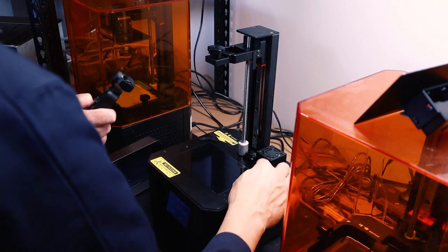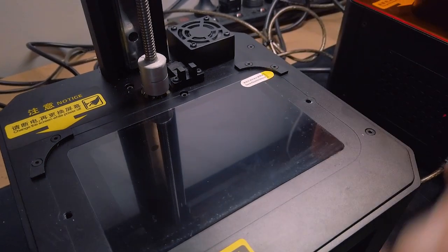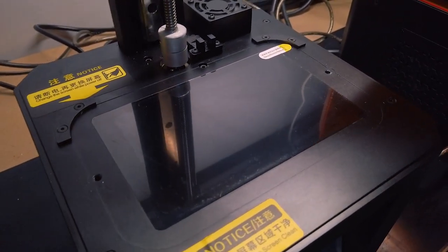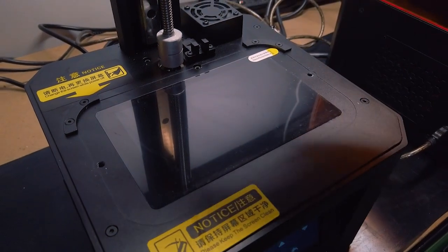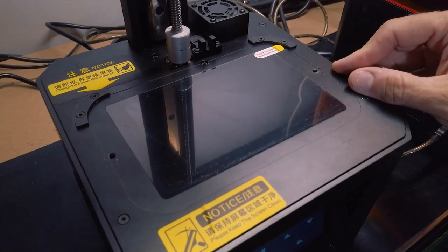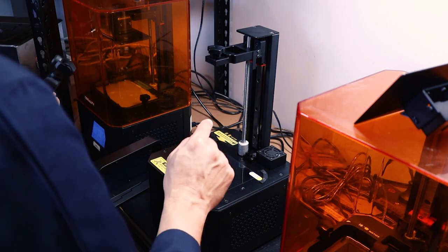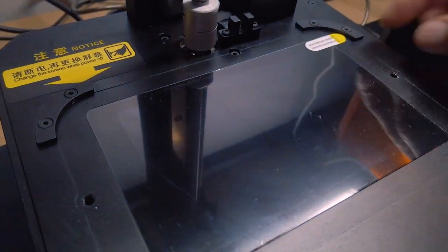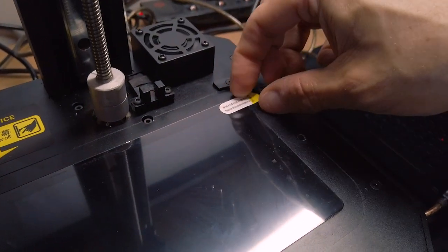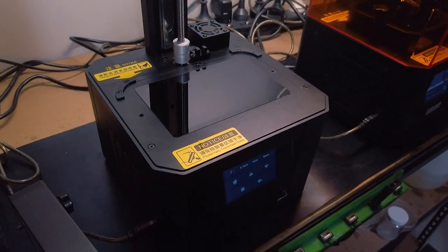You'll see that there's a protective cover on the monochrome screen and you can remove that if you are planning to use the vat to level the build plate. Otherwise you could just leave that there and use it to level the build plate directly onto it. Try not to ever level the build plate without something between the build plate and the monochrome screen because you will damage the surface of the glass that's under there.